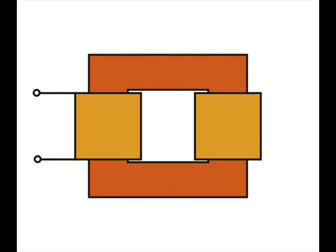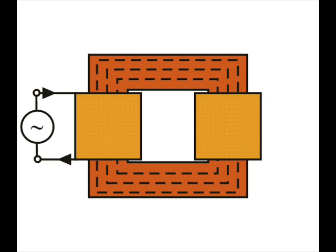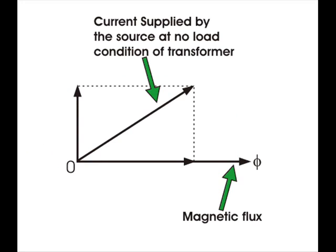When an alternating source is applied in the primary, the source will supply the current for magnetizing the core. But this current is not the actual magnetizing current but a little bit greater than the actual magnetizing current.